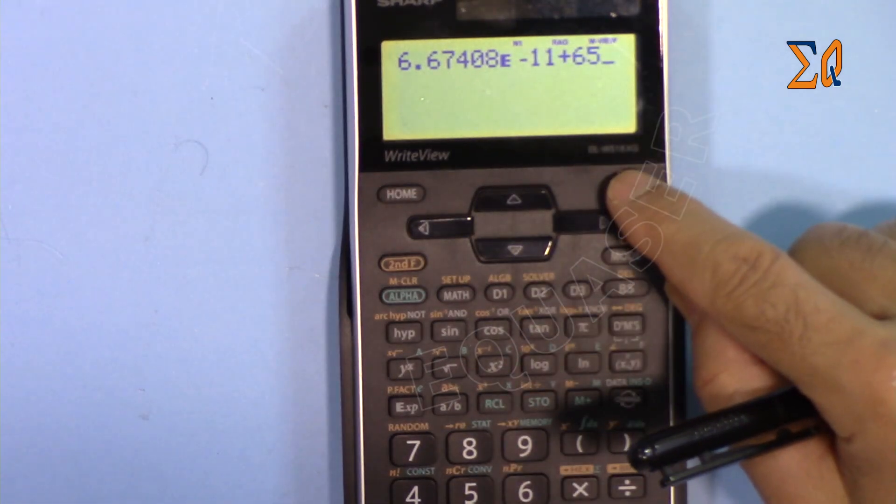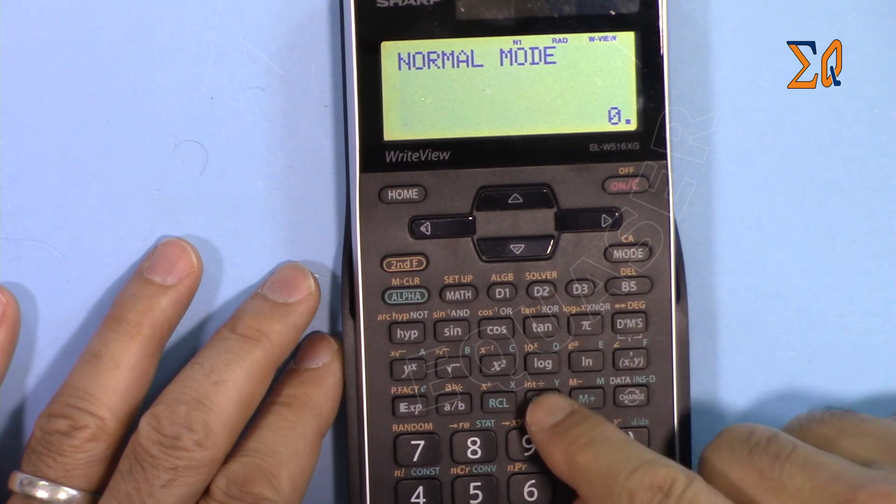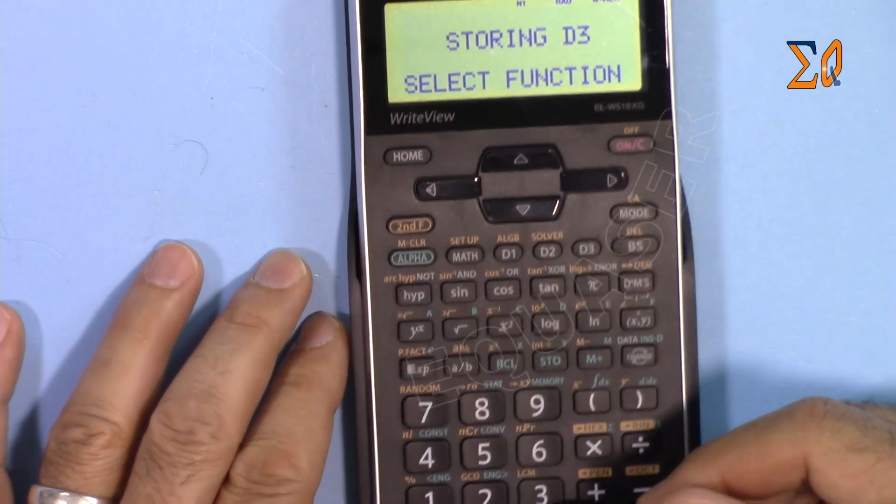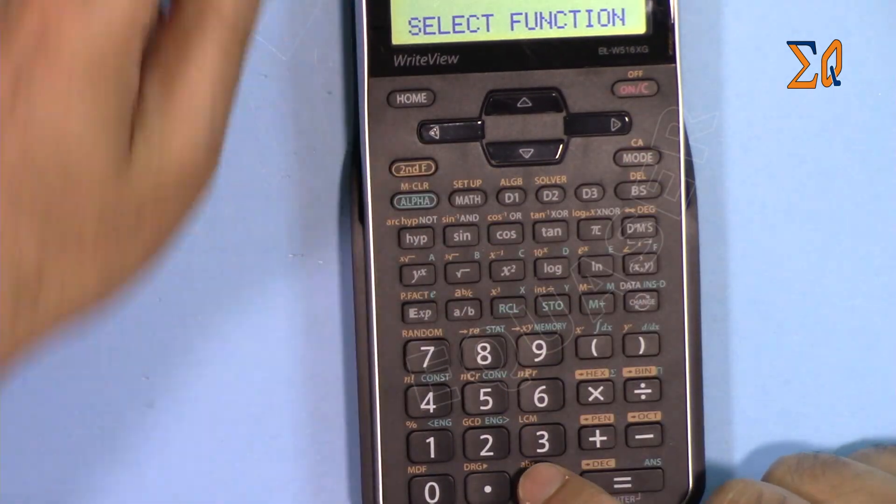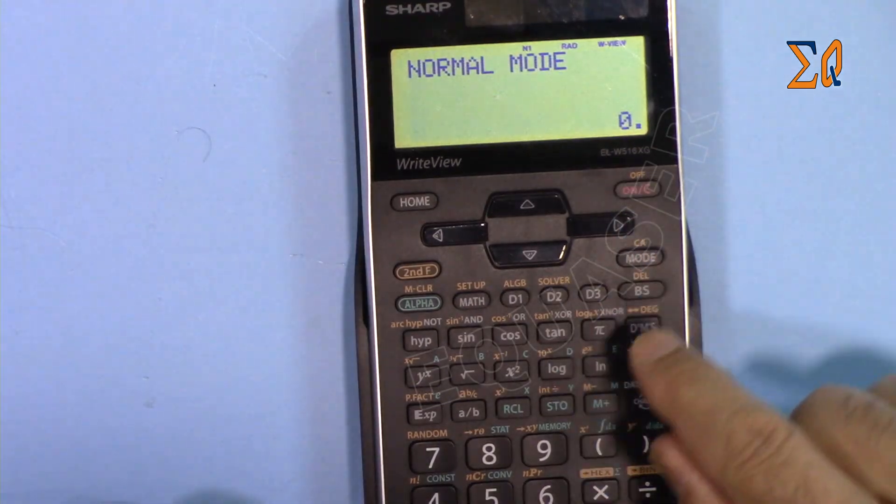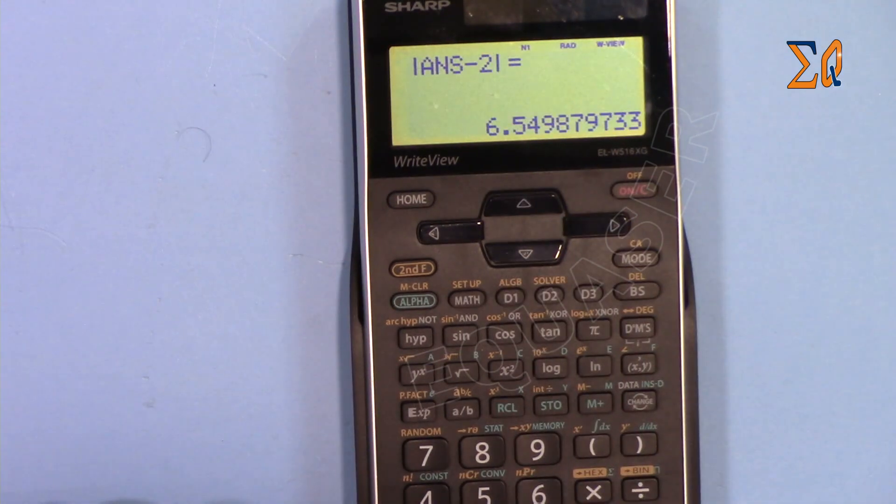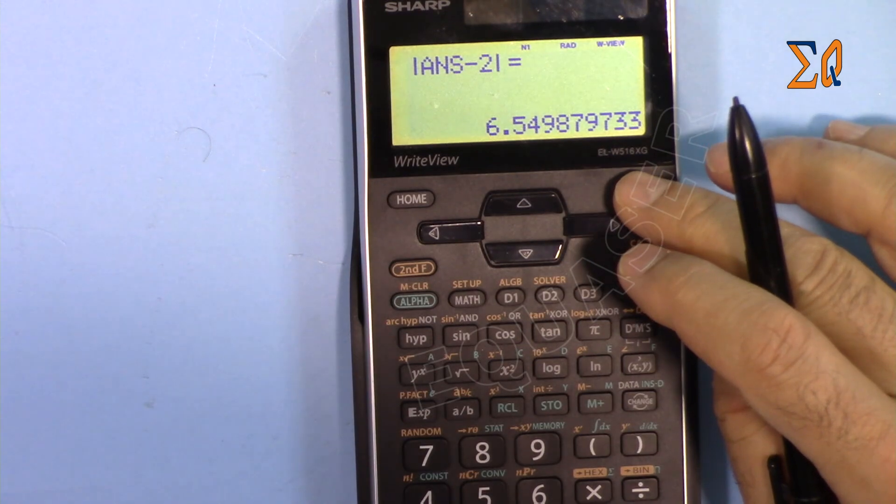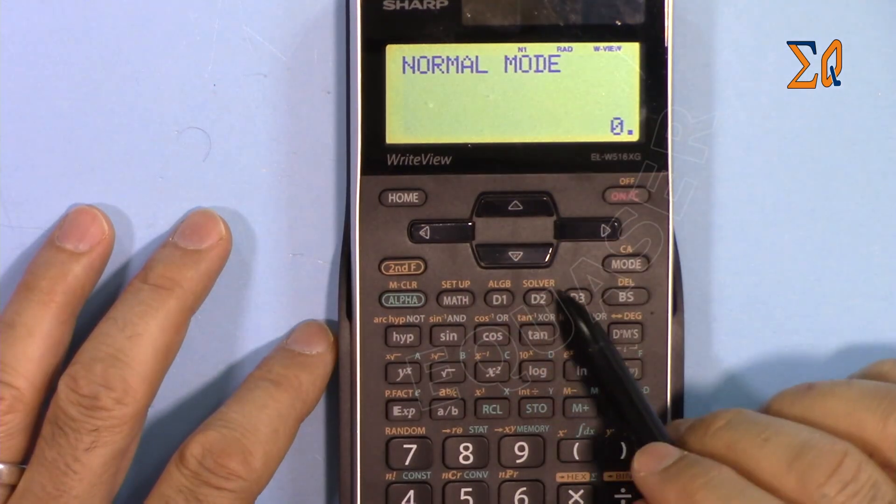Now let's program this one for the absolute value. So STO, D2, and then for absolute we press second function and ABS. Now it's stored. So anytime you want to use it, just ABS and then that's your value and it will just work.